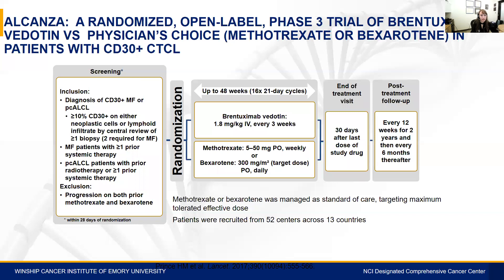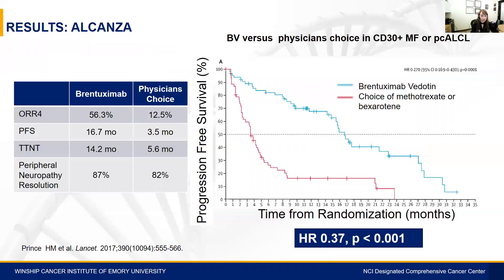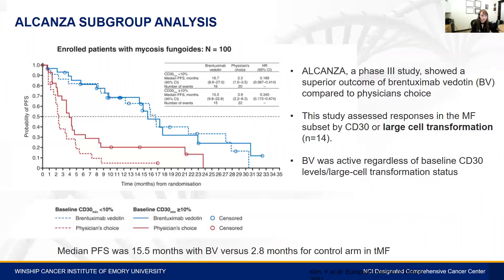Brentuximab vedotin is a CD30 drug-antibody conjugate. It was studied in the Phase III ALCANZA trial — one of the first large randomized studies showing benefit in CTCL — compared to methotrexate or bexarotene in patients with CD30-positive cutaneous T-cell lymphoma. Results demonstrated significant improvement with brentuximab vedotin. A recent subgroup analysis looked by CD30 percentage or large cell transformation. Among 14 patients with large cell transformation, brentuximab vedotin was more effective, with a median progression-free survival of 15.5 months versus 2.8 months.